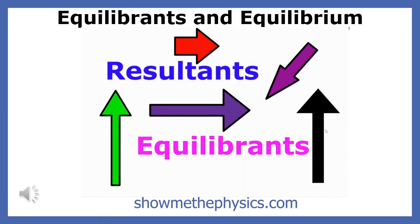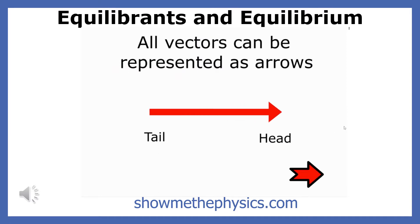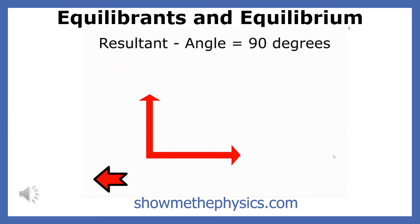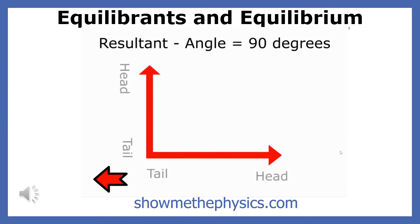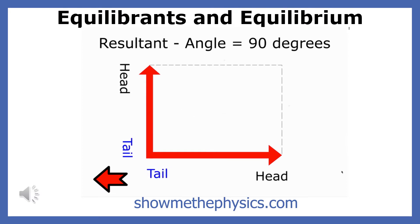When the net force acting on a body equals zero, the system is said to be in a state of equilibrium or balance. This presentation will teach you how to calculate the magnitude and direction of the force needed to put a system in a state of equilibrium.